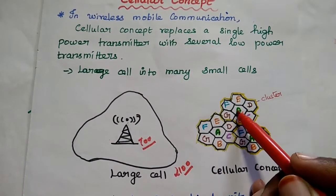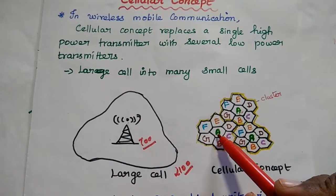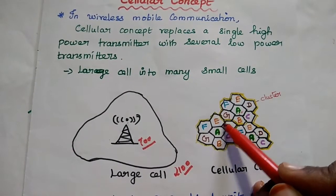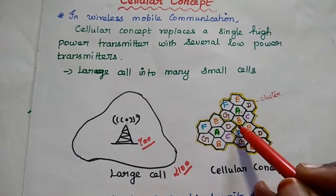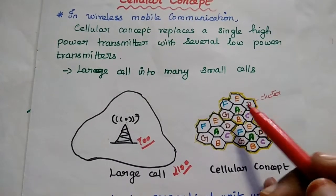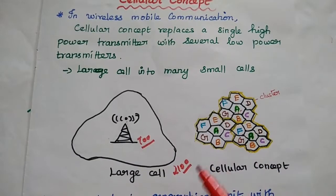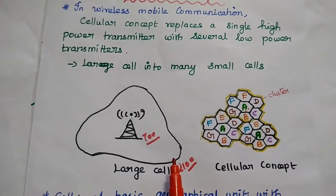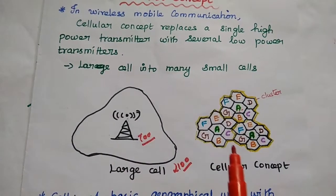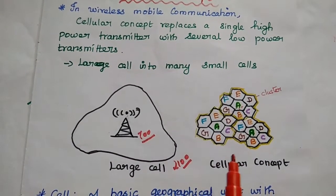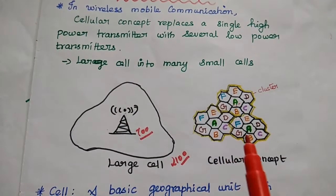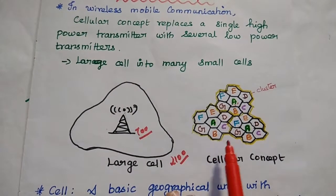Here, we can use the same set of frequencies in the other cluster but we have to ensure that the distance is sufficiently large enough in order to avoid the interference. So here, we can support 2,100 subscribers with only 700 channels. We can say this cellular concept is mainly used to increase the spectral efficiency as well as the user capacity.